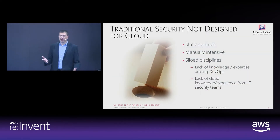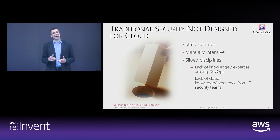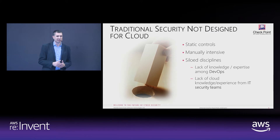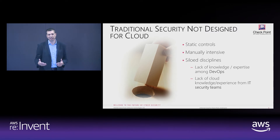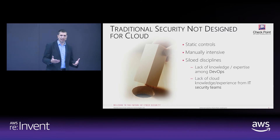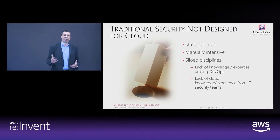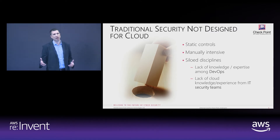Traditional security is definitely not designed for the new agile cloud. It has static controls, it's usually manually intensive, and there are siloed disciplines within the organization. DevOps wants to be as agile as the cloud, and they see security as a burden — something that doesn't allow them to move as fast as they want. On the other side, IT security teams want to enforce security as much as they can, but are not necessarily as familiar with how the cloud infrastructure really works.